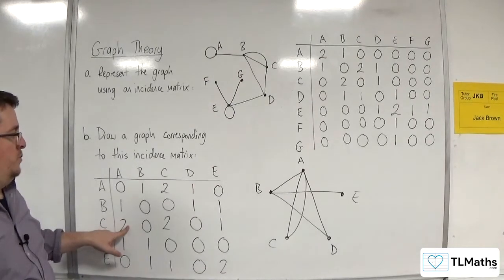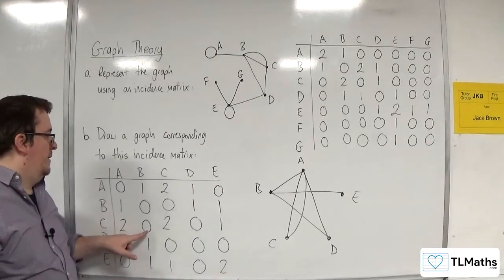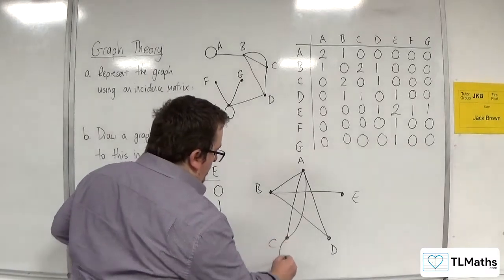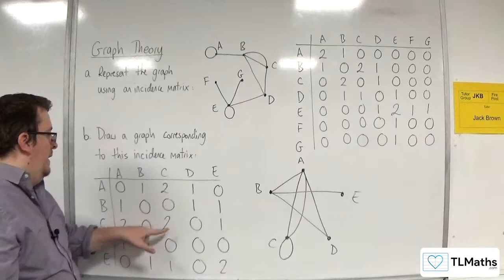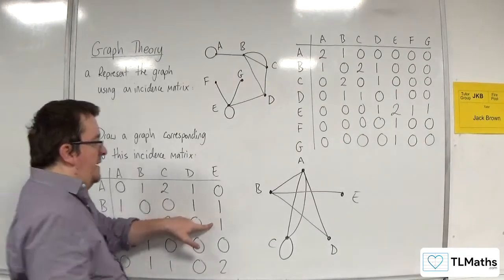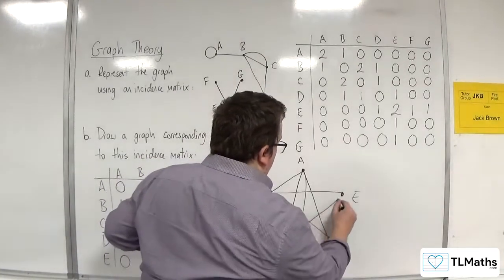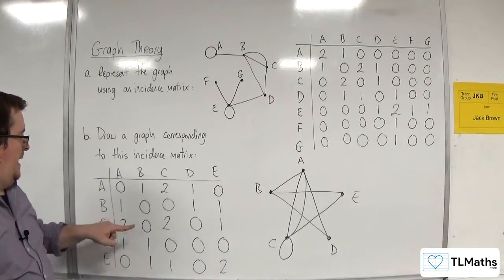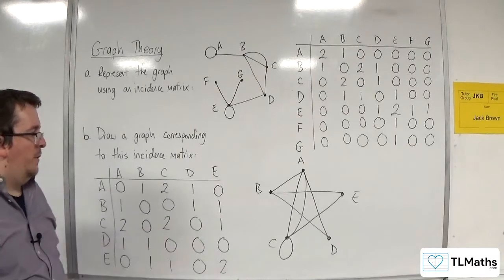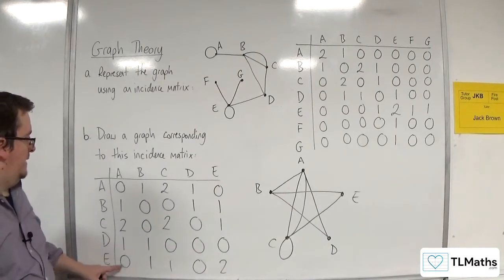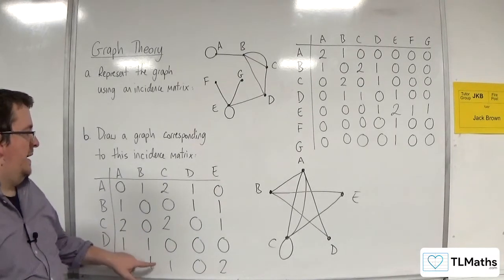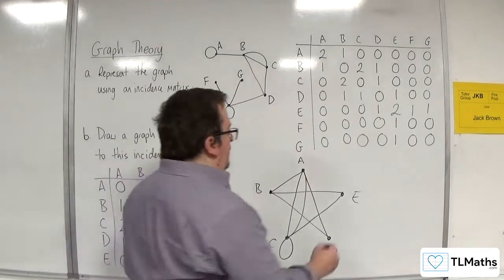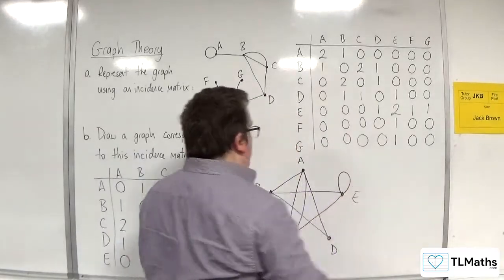C is twice connected to A, which we already have. It's not connected to B. It's twice connected to itself, so there's a loop on C. It's not connected to D but is connected to E. D is connected to A and B and no others. E is connected to B and C, which we've already done, but it's also connected to itself, so we have a loop there as well.